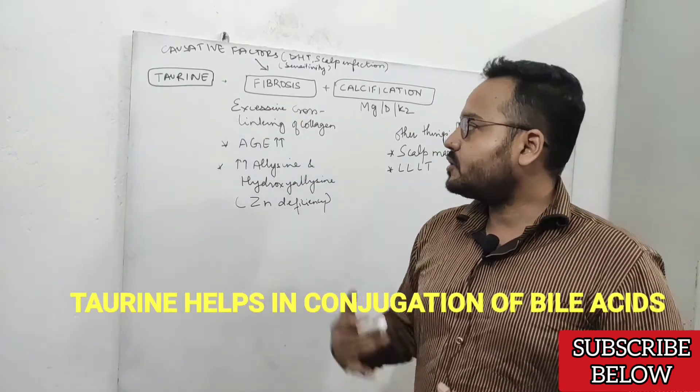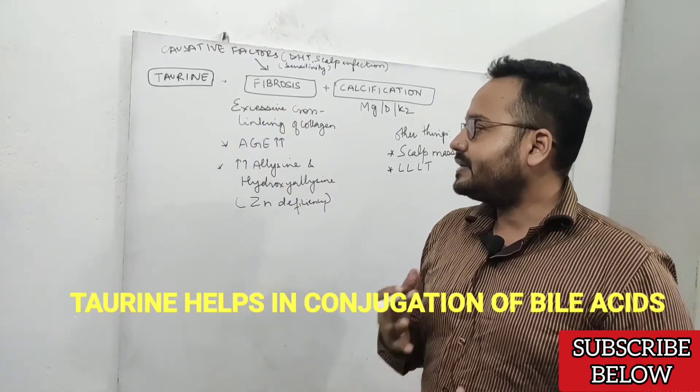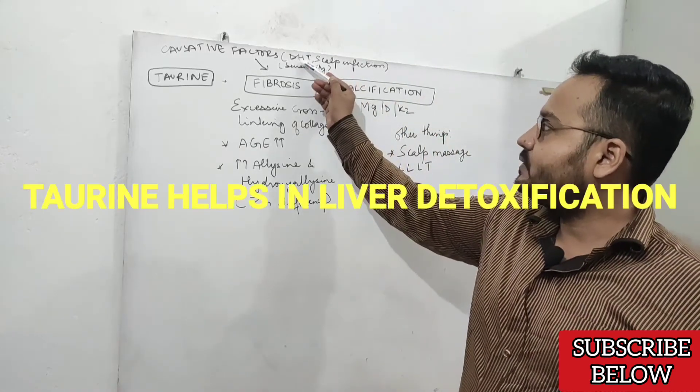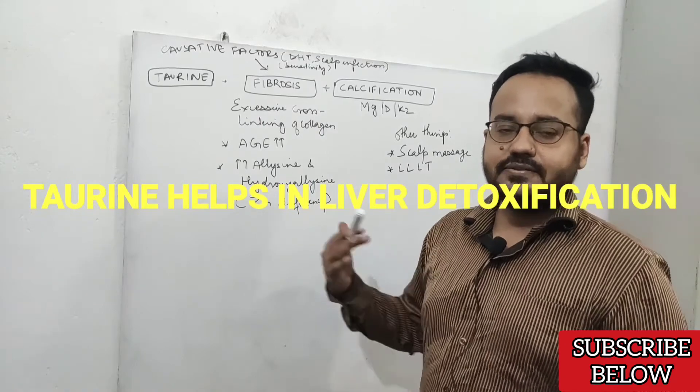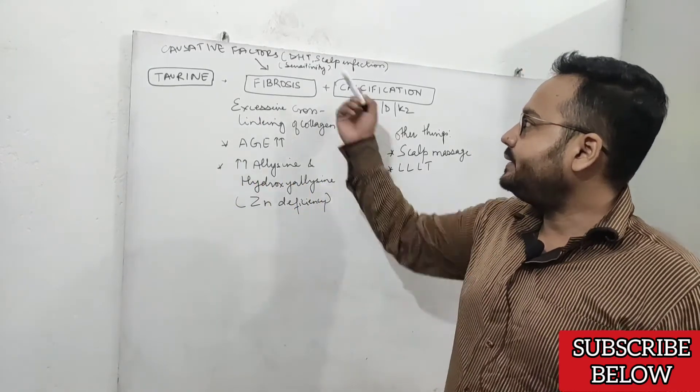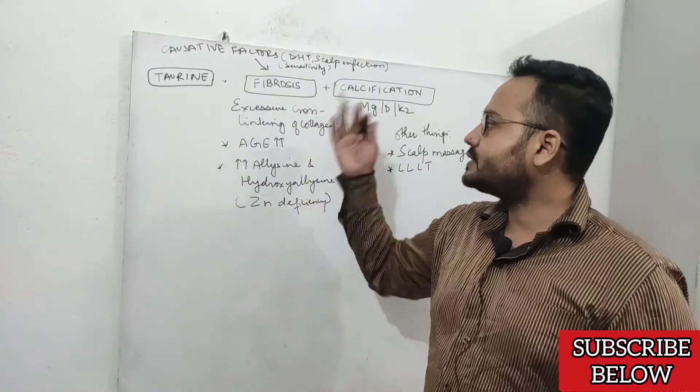Especially if you have DHT on the higher side and your scalp receptors are sensitive to DHT, and if you have taurine deficiency, all those things can lead to fibrosis and rapid hair fall.